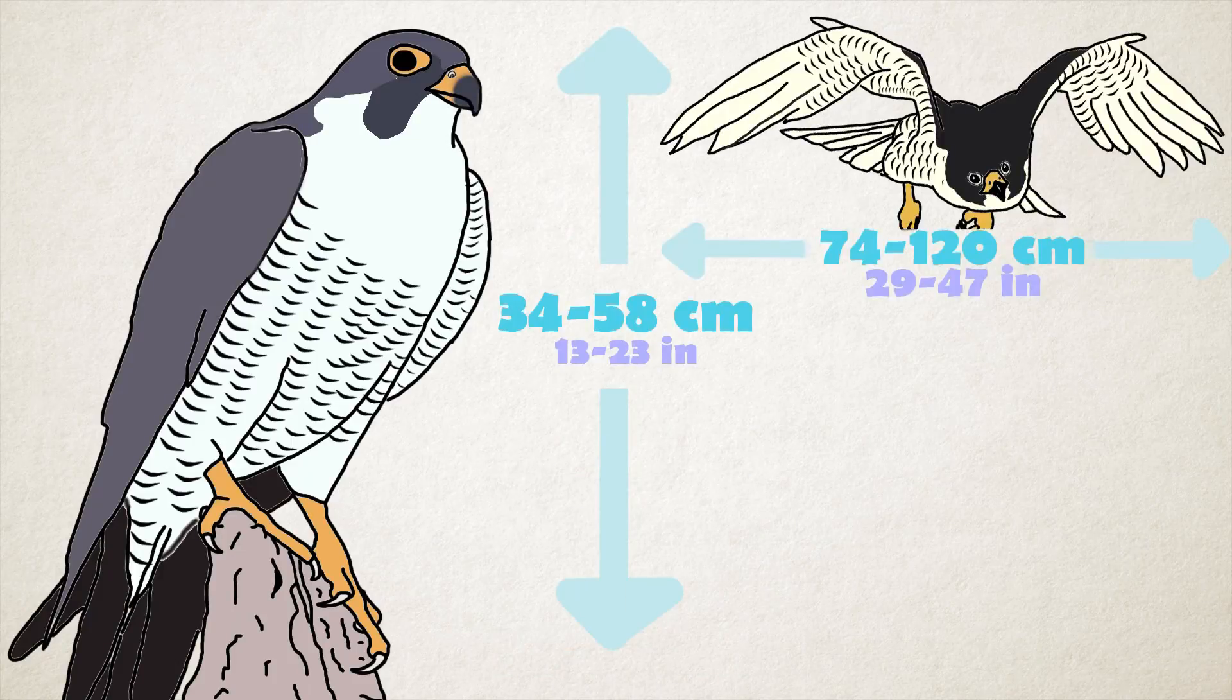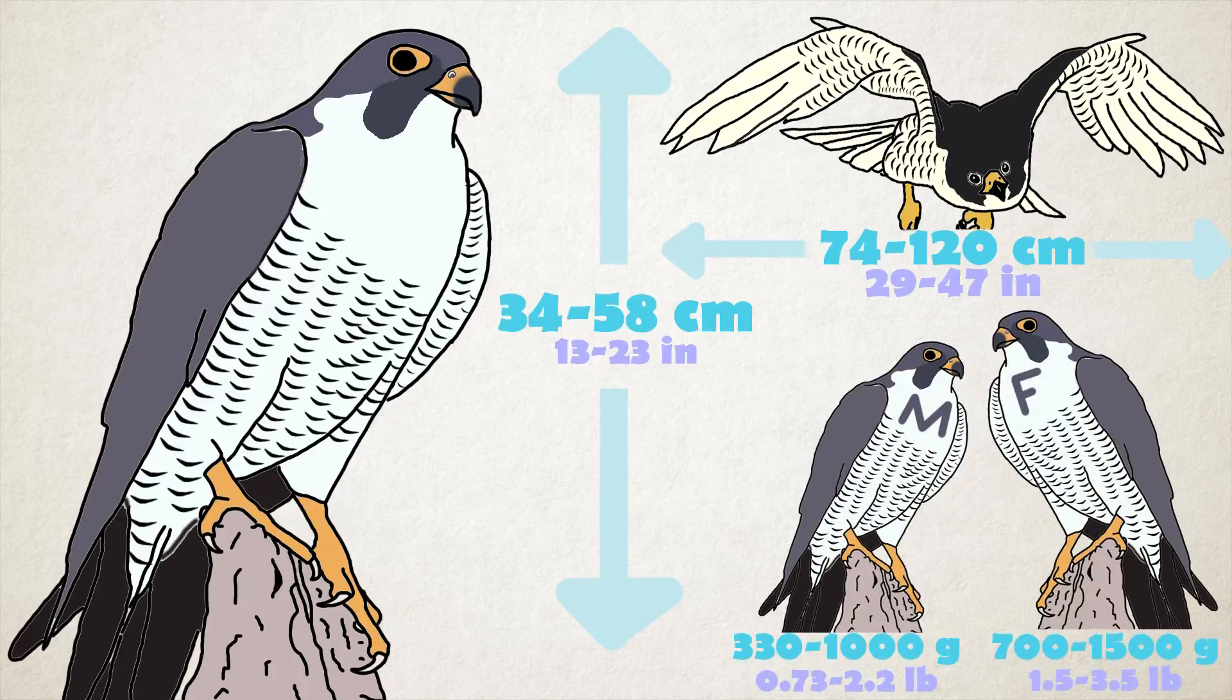The Peregrine Falcon has a body length of 34 to 58 centimeters and a wingspan from 74 to 120 centimeters. As with many birds of prey, the male Peregrine Falcon is slightly smaller than the female. Males weigh 330 to 1000 grams and females weigh 700 to 1500 grams, but they look the same.